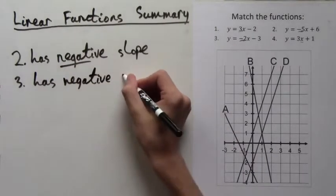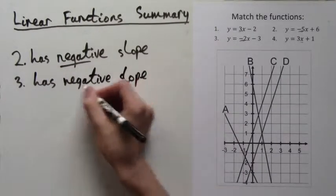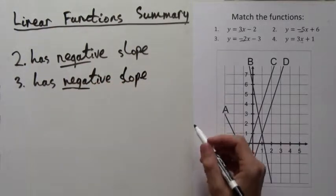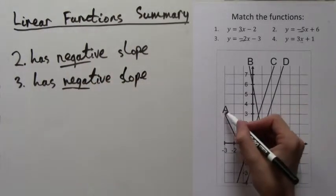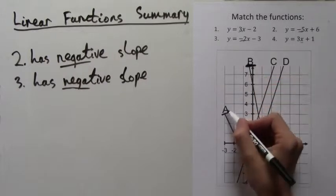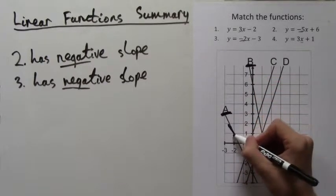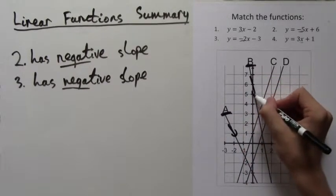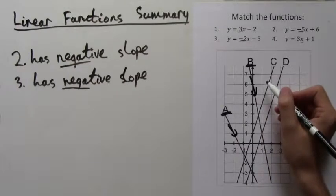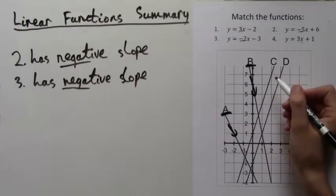Now let's take a look at which lines drawn on the coordinate plane also have negative slope. These are the lines A and B, because A and B are both decreasing when x increases. They slope downwards.